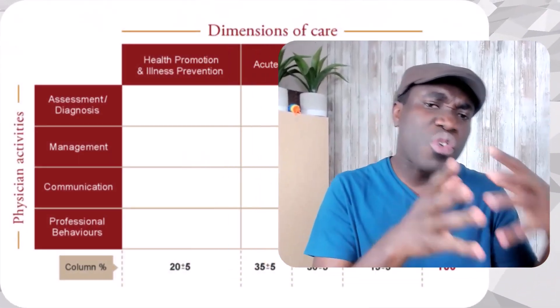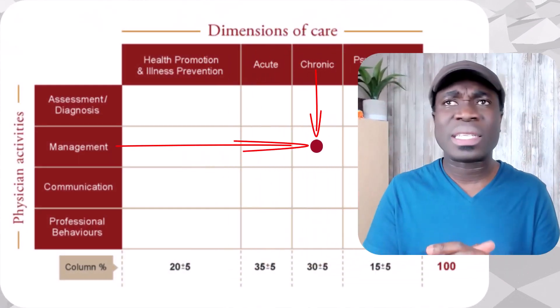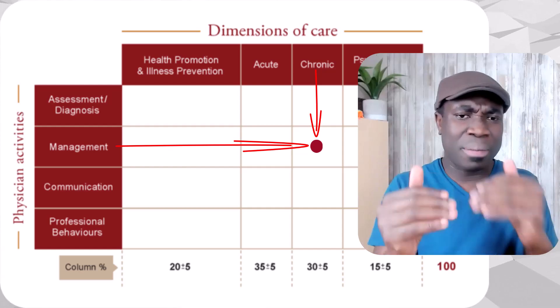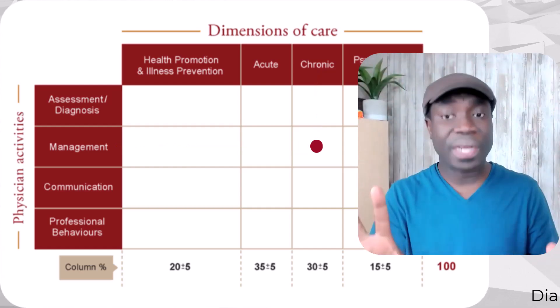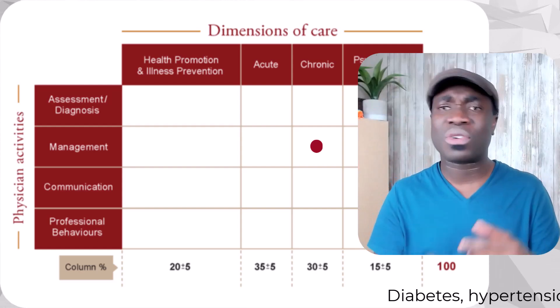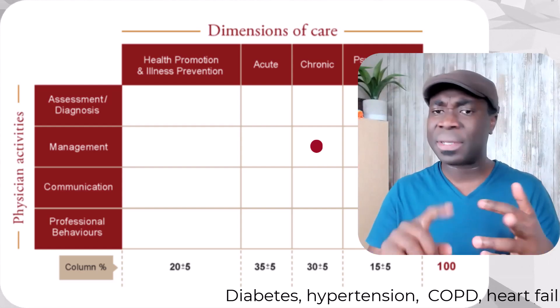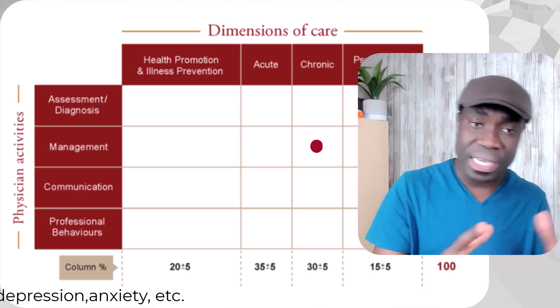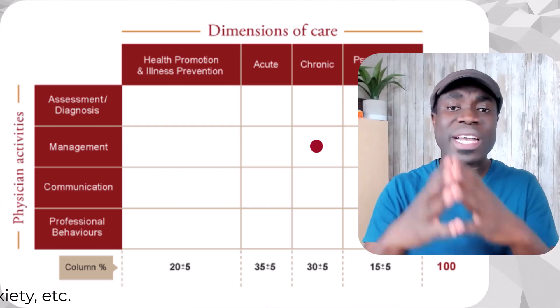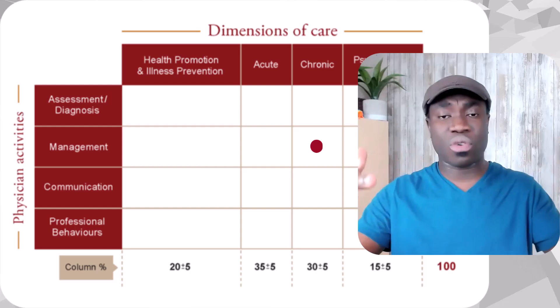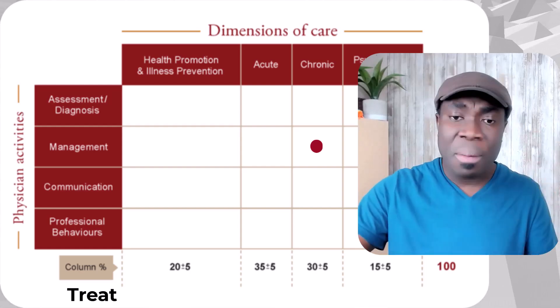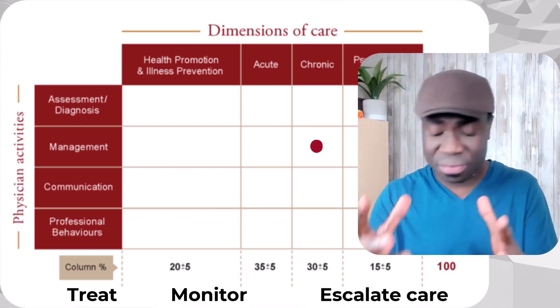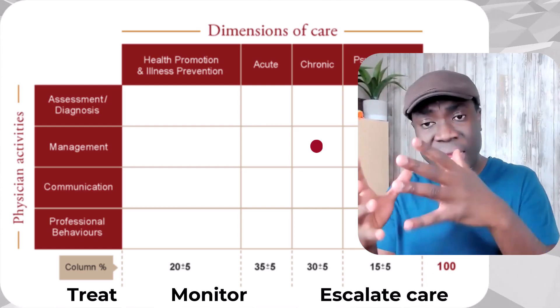The second zone I want you to focus on is chronic illness and management, covering about 52 questions. This includes chronic conditions like diabetes, hypertension, COPD, heart failure, and chronic mental health conditions like depression and anxiety. You'll be expected to know the Canadian guidelines on these chronic conditions — how to treat them, how to monitor them, and how to escalate care, moving the patient from a primary care provider to a specialist.